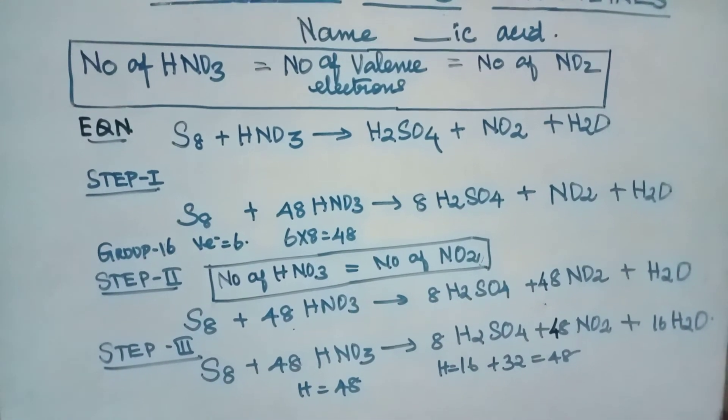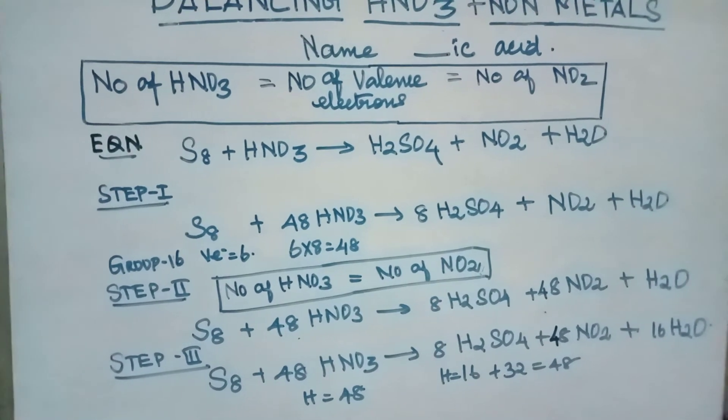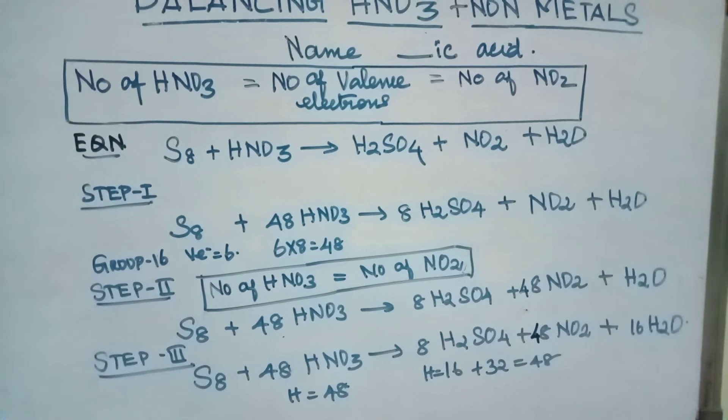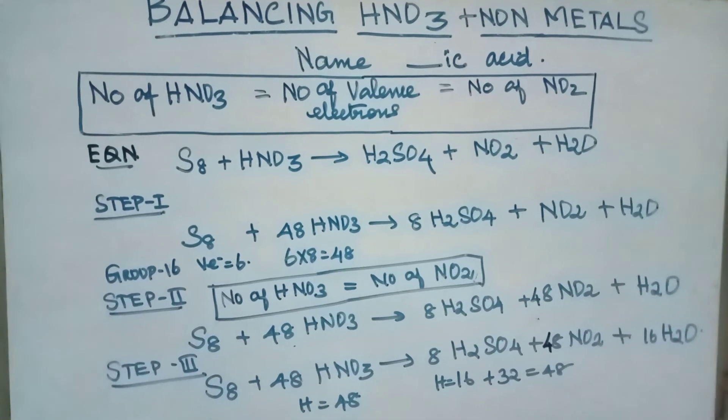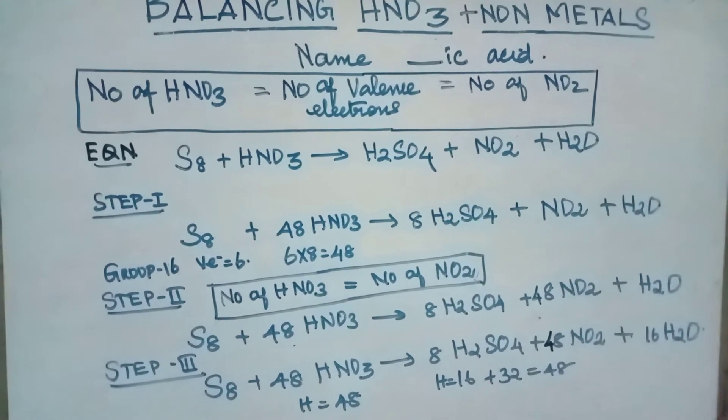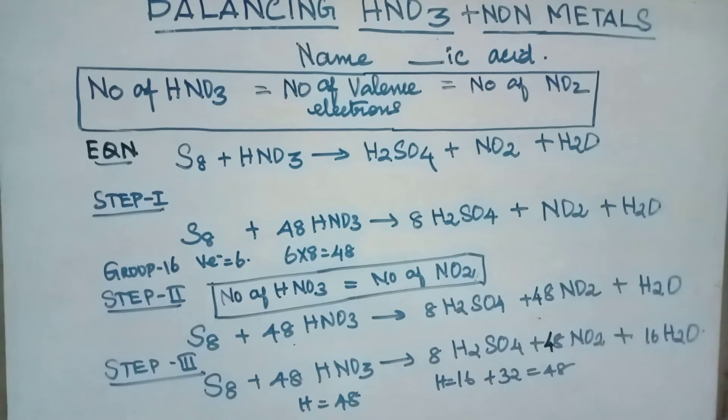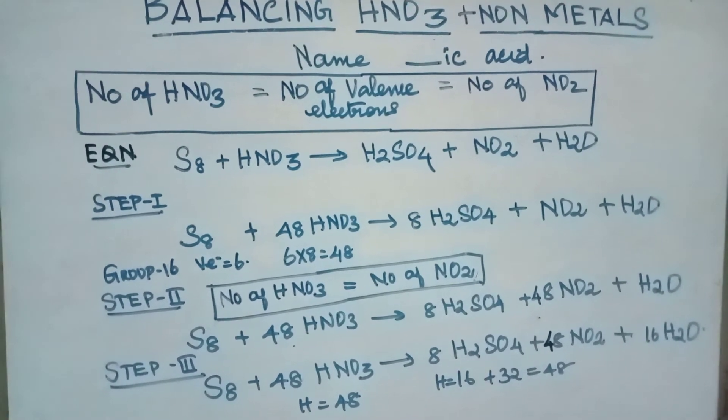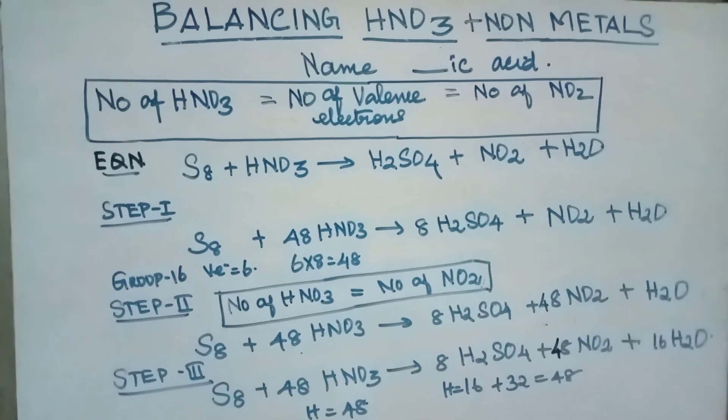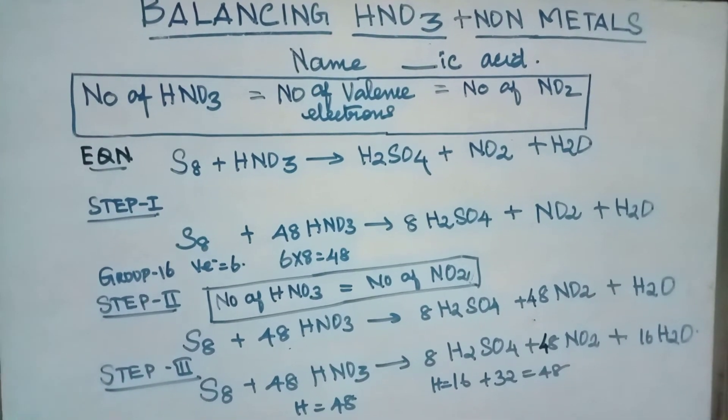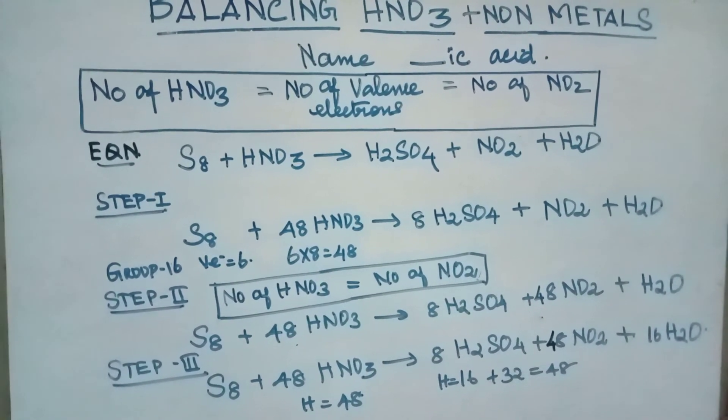Last step, H2O is balanced. If we are multiplying that 2 with 16, we will get 32. So, 16 plus 32 will give 48 hydrogen atoms.